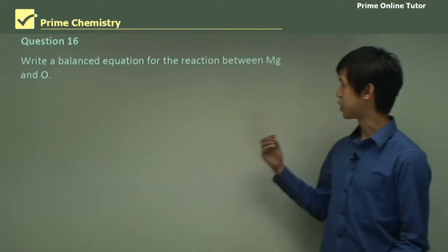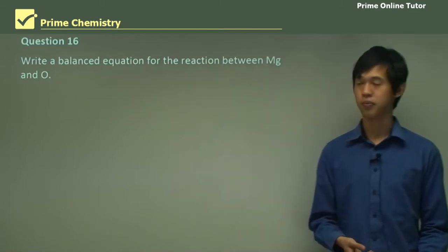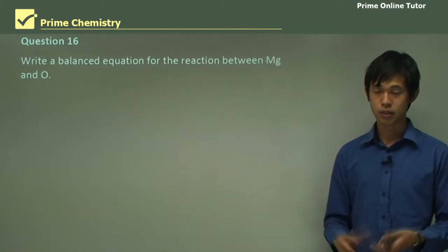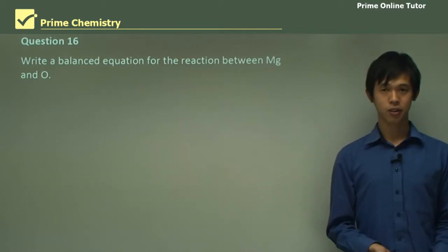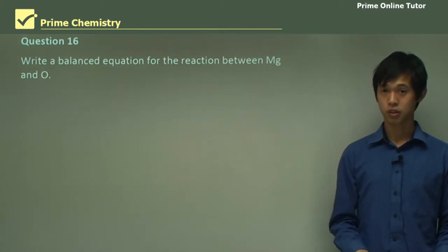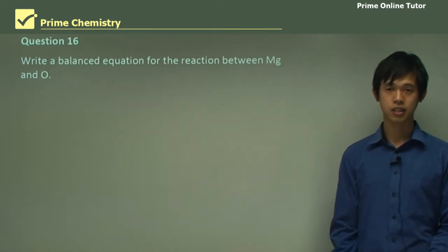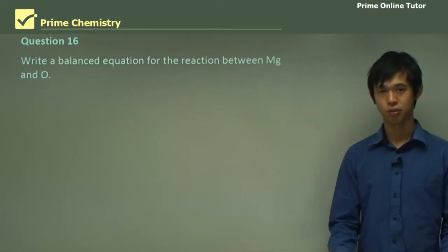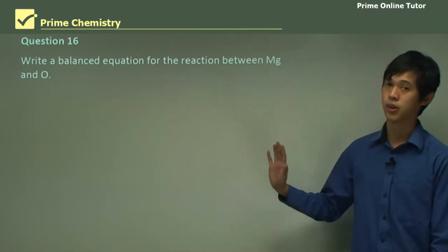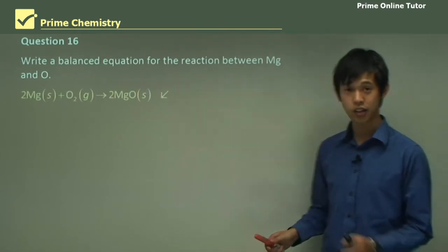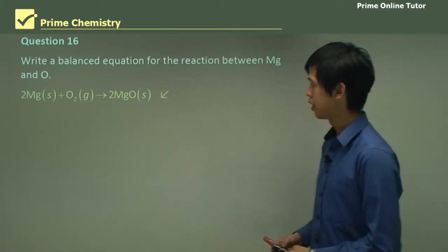So the first thing is, write a balanced equation between magnesium and oxygen. So the reaction for magnesium and oxygen. Now, I've been told that writing balanced chemical equations is one of the things that people struggle with. So we'll go through it slowly, step by step, and hopefully you'll become more confident in answering these questions. So this is the answer, but I'll go through how we actually got there in the first place.